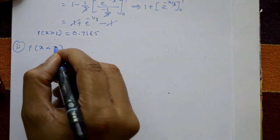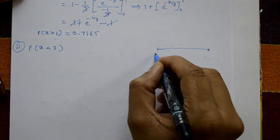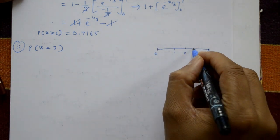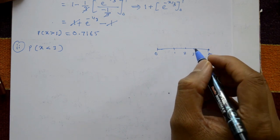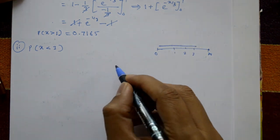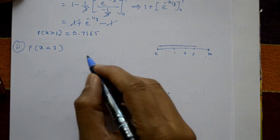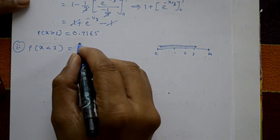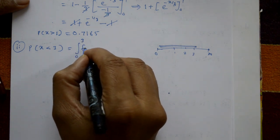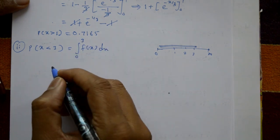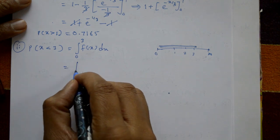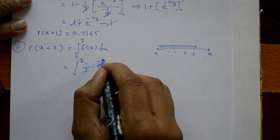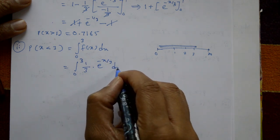Case 2: Find the probability of X less than 3. The required area is from 0 to 3. So we take the integral from 0 to 3 of f(x) dx, which equals the integral from 0 to 3 of (1/3) · e^(−x/3) dx.